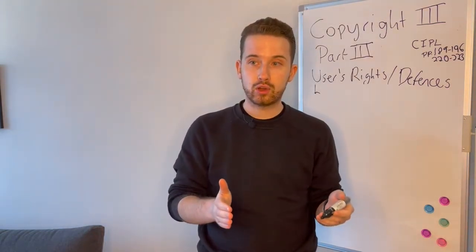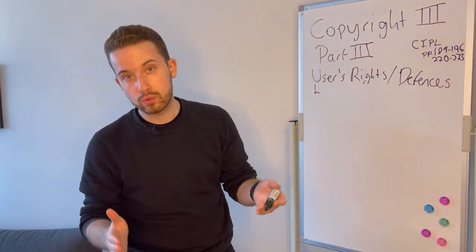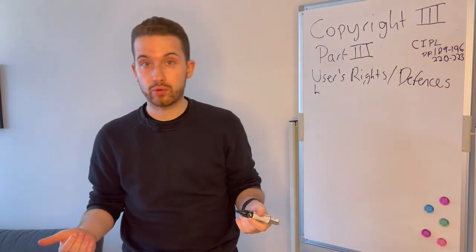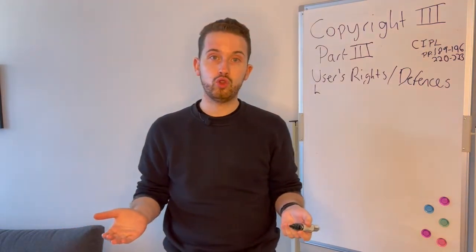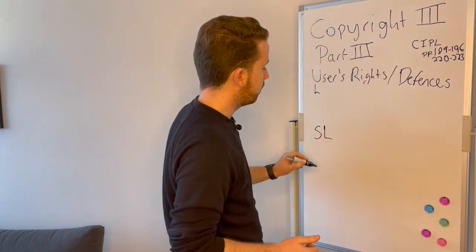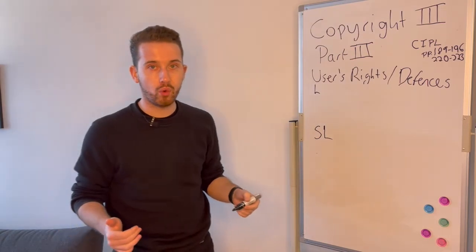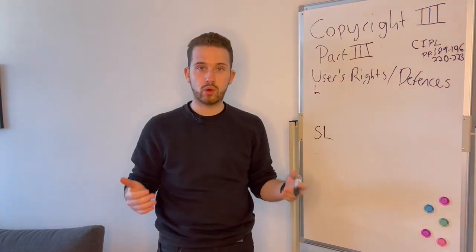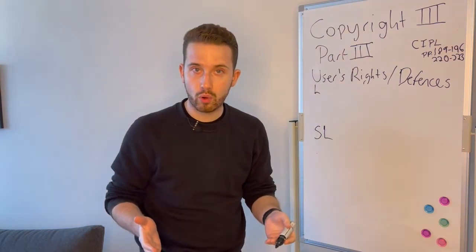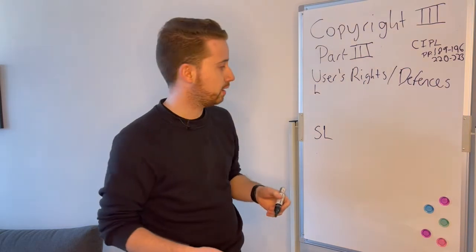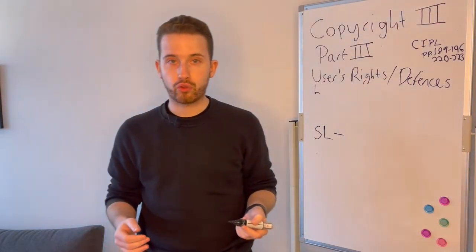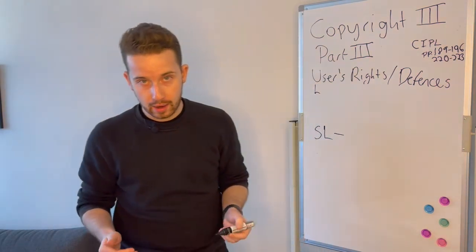All of that happens under the economic rights part of the Copyright Act, which is the main regime. We'll look briefly at how moral rights work in a context of infringement — what is an infringement of your moral rights and what can you do about it. Before that, I want us to briefly think about something mentioned in several of the cases we looked at this week: the concept of strict liability. You're told a number of times that the Copyright Act is a strict liability regime — what does that mean?